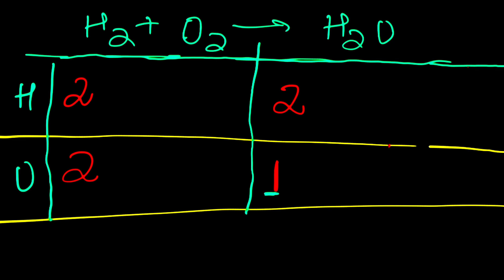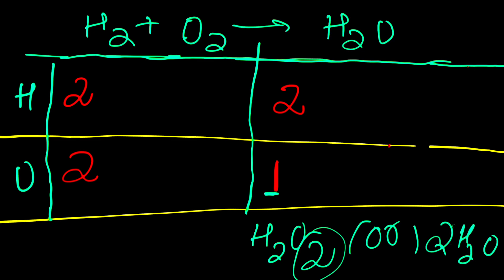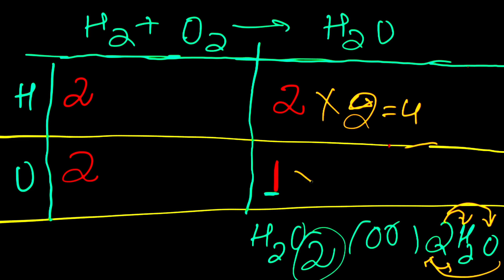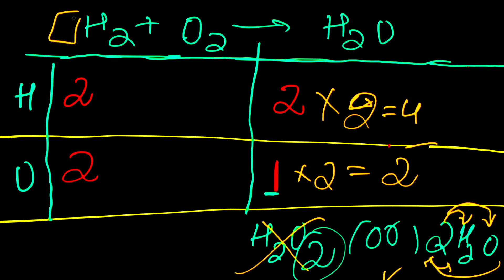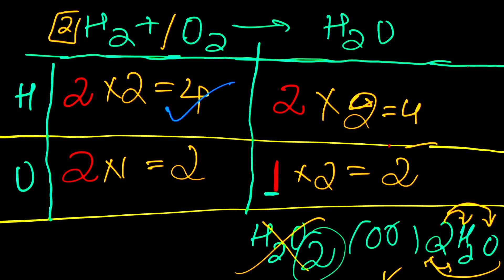Now we have to balance the oxygen. We increase the coefficient number — coefficient number and subscript number are multiplied together. For example, 2 into 2 for subscript and coefficient gives 4 hydrogens, and 1 into 2 gives 2 oxygens. We add the coefficient number on the left-hand side — putting 2 there gives us balance. Left-hand side: 4 hydrogens; right-hand side: 4 hydrogens. The equation is hence balanced.